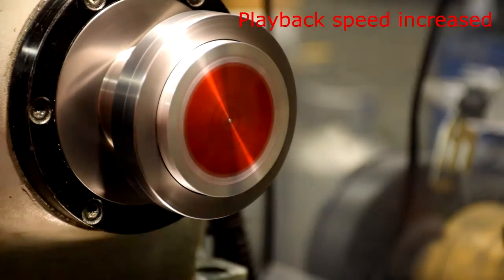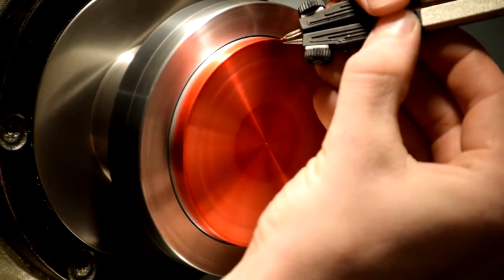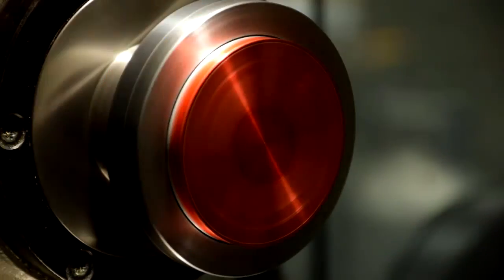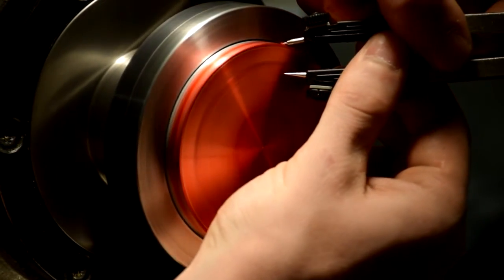Apply machinist dye to the face of the part. Scribe lines for the chamfers on the face of the part using a compass. For the outside chamfer, scribe a line at 0.050 from the side of the part.